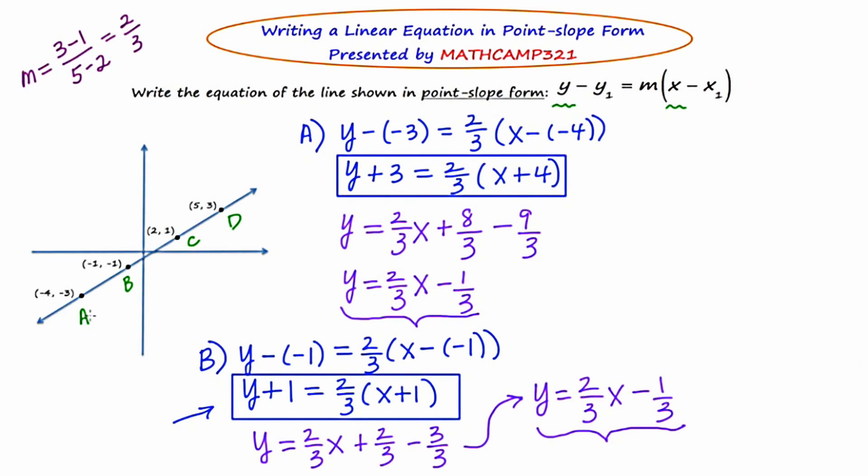I'll do this process one more time. If you feel like you have it, you could stop. But if you want to watch it one more time, I'm going to do it from the perspective of point D. I'll just skip to point D. So this would be y minus 3 equals 2 thirds the quantity x minus 5. There's your point-slope form.